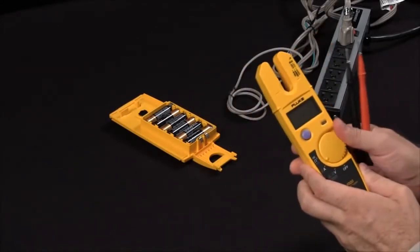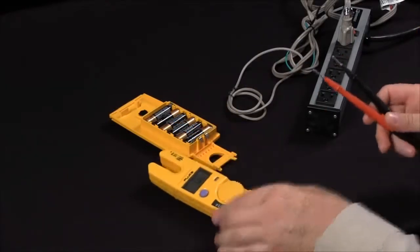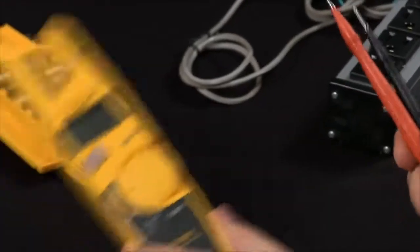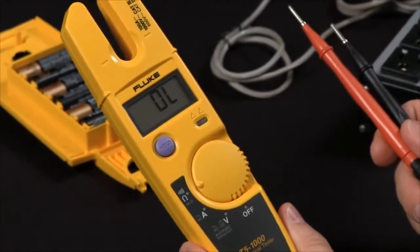Let's start off by making a continuity measurement. All you do is touch your test leads together, showing you that you do have continuity. You can also measure resistance up to 1000 ohms.